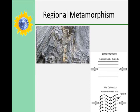Regional metamorphism usually results in forming metamorphic rocks that are strongly foliated, such as slates, schists, and gneisses. The different stresses usually result from tectonic forces that produce a compression of the rocks, such as when two continental masses collide with one another.